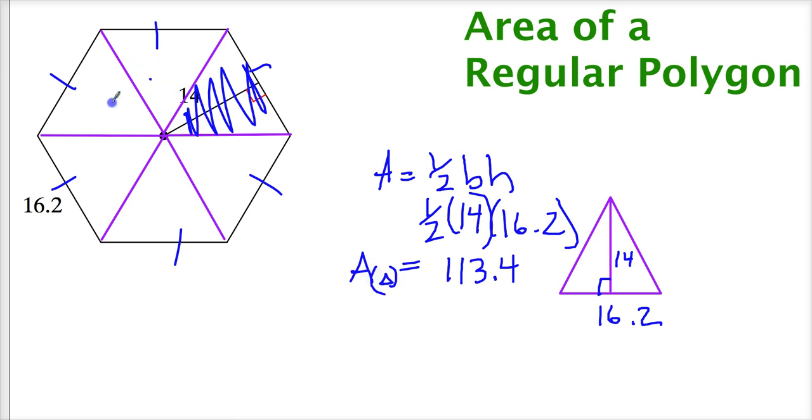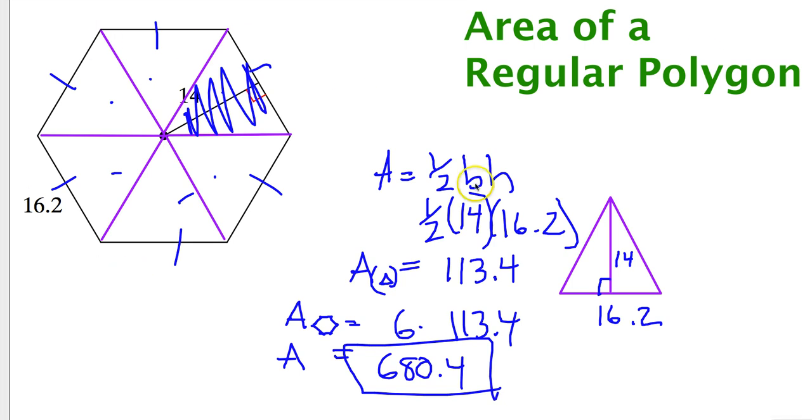Now, I know that there are 1, 2, 3, 4, 5, 6 of them. So I'm going to say the area of my hexagon is 6 times this. So there you go. That's the area. And I can do a little test here to make sure that's right. And it is.